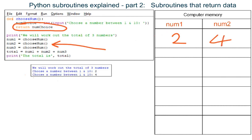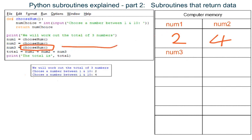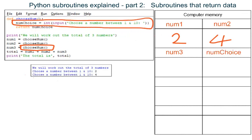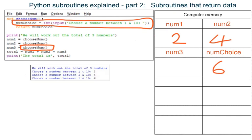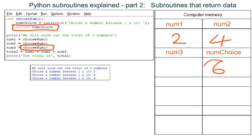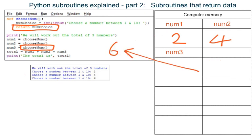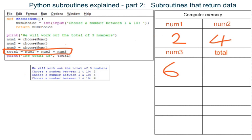The num3 variable is made. Subroutine choose_num is called and Python jumps up the program to do the code inside the subroutine. Local variable numchoice is made and an integer is stored in it. Python gets the data out of variable numchoice, then destroys this variable. Python returns with the data to the place where the subroutine was called and stores the data in the already made num3 variable. Variable total is made and the data in num1, num2, and num3 are added together and stored in it.